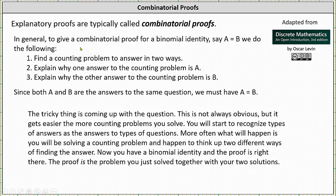In general, to give a combinatorial proof for a binomial identity, say A equals B, we do the following.